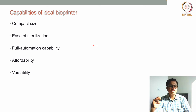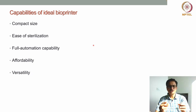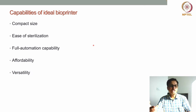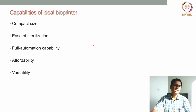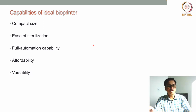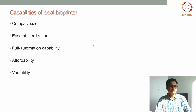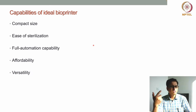Ease of sterilization is another requirement. Tissue printing is an aseptic process and sterility must be maintained to avoid contamination. The printer should be easy to sterilize without requiring much effort. Full automation capability is also needed — the whole bioprinting process should be automated with very little user intervention. Currently, most printers are semi-automatic, not fully automatic.